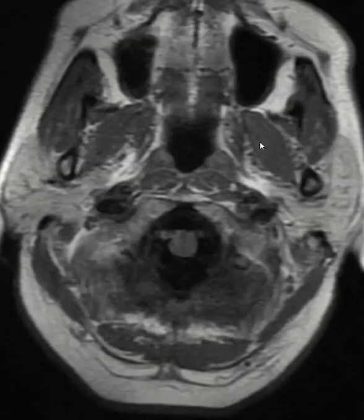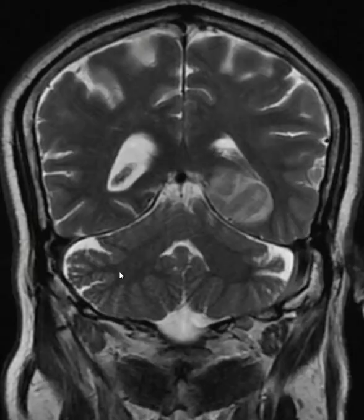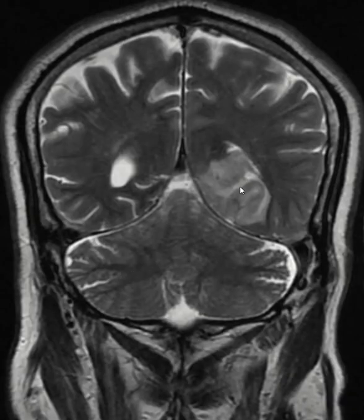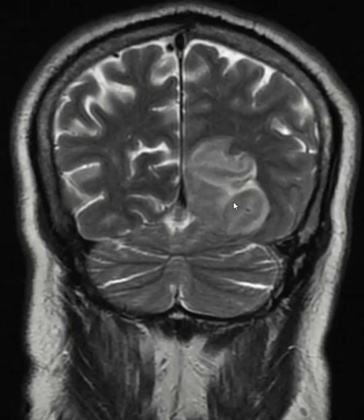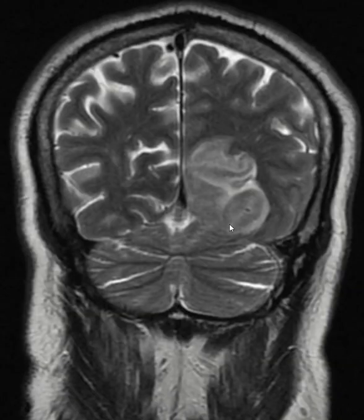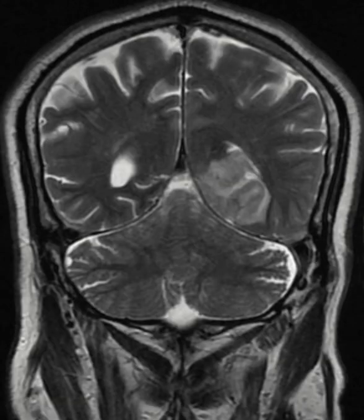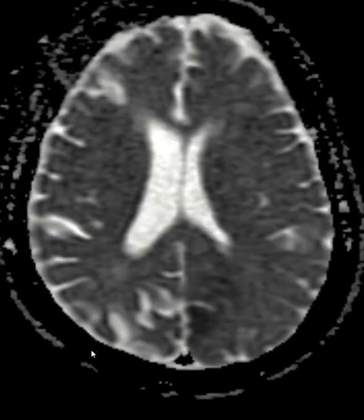Let us look at T2 weighted images. Again, you can see it is predominantly hyperintense, but areas of hypointensity are there. On T1 weighted images, again it will be hypointense. And on coronal images, you can see the affected PCA territory. There is some mass effect, but it is not really significant — it is just pinching the lateral ventricle.